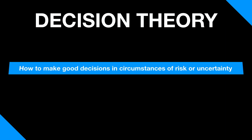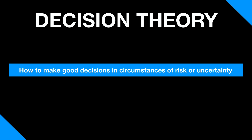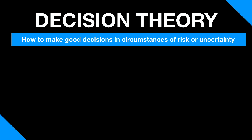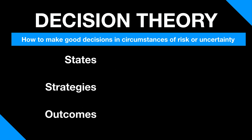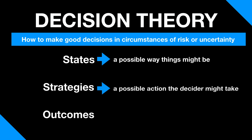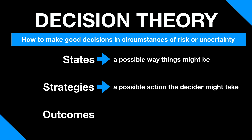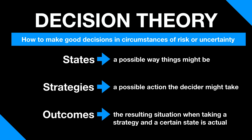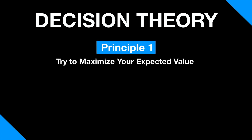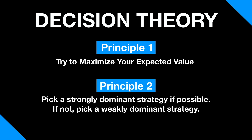Decision theory is essentially about how to make good decisions in circumstances of risk or uncertainty. This theory can be applied to mundane tasks like whether to take a bus or a taxi. It can also apply to really significant choices like what career you will pursue. Three concepts are absolutely foundational: states, strategies, and outcomes. A state is a possible way things might be. A strategy is a possible action the decider might take. And an outcome is the resulting situation when taking a strategy and a certain state is actual. Decision theory offers two principles to guide you when taking risks: first, try to maximize your expected value; and second, pick a strongly dominant strategy if possible. If not, try to pick a weakly dominant strategy.